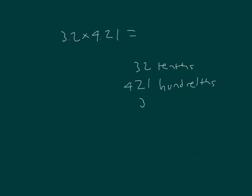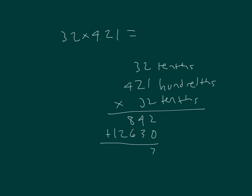Let me reorder that so it's easier to solve. 2 times 1 is 2, 2 times 2 is 4, 2 times 4 is 8. Place a zero. 3 times 1 is 3, 3 times 2 is 6, and 3 times 4 is 12. Add those together: 13,472 thousandths, which equals 13.472.